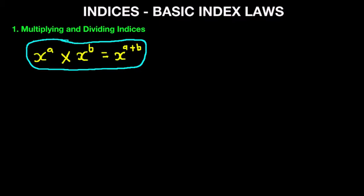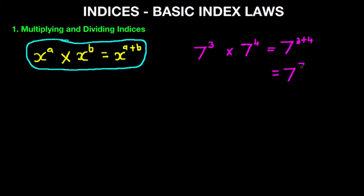Now we're going to work through a simple example. Suppose we have 7 to the power of 3 times 7 to the power of 4. Using our rule, this becomes 7 to the power of 3 plus 4, so the answer is 7 to the power of 7. When multiplying indices, we simply add them together.